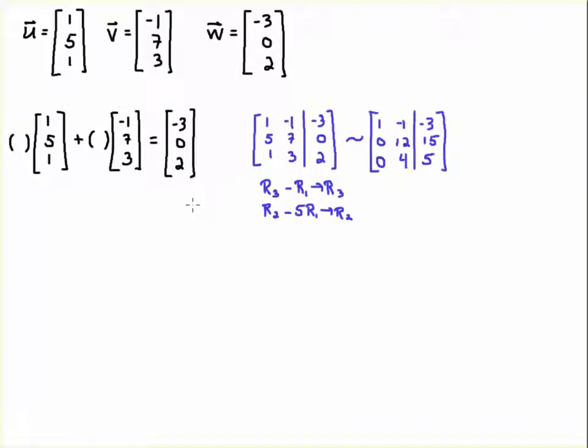Now what we did there was we solved this system of equations. We thought of this linear combination here with these parentheses designating the unknowns as a system of equations and we wrote it as an augmented system. Then we've done the row reduction and we solved the system. We see that X2 is 5 fourths and X1 turns out to be minus 7 fourths. So minus 7 fourths U plus 5 fourths V is equal to W, so W can be written as a linear combination of U and V.